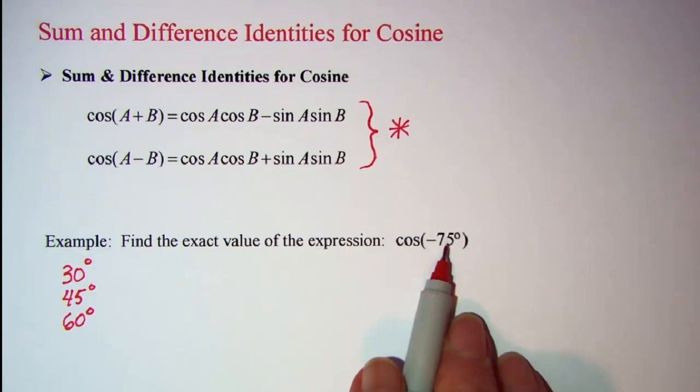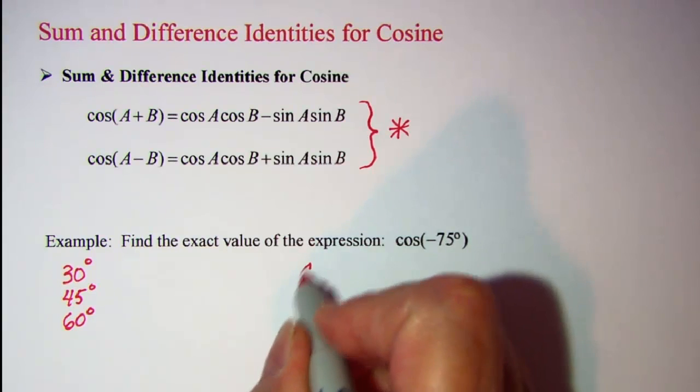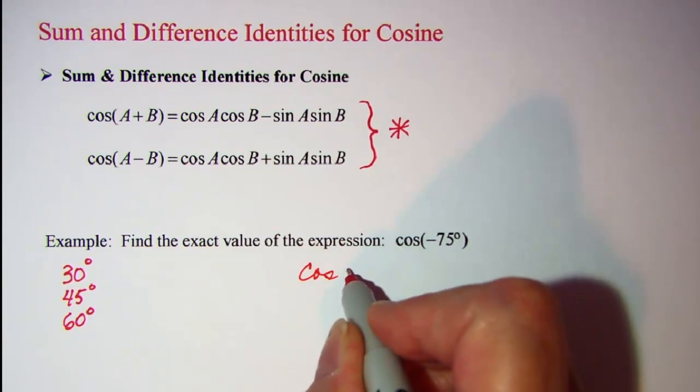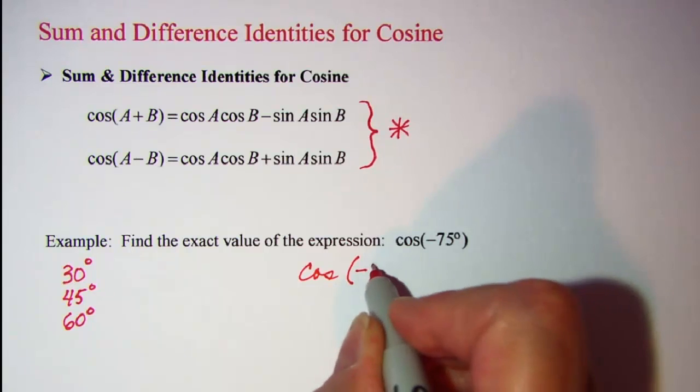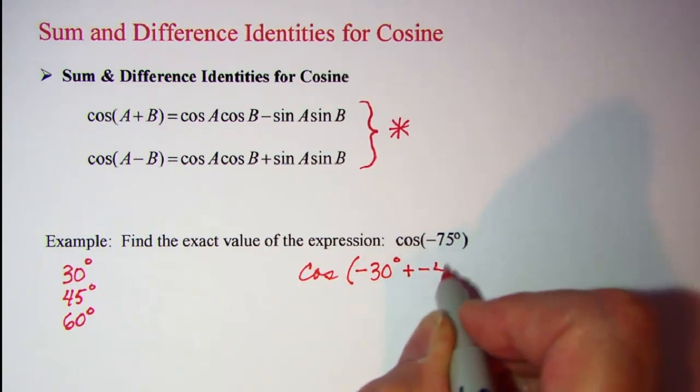Negative 75 is the same as a negative 30 plus a negative 45. So I'm going to write this as cosine of negative 30 degrees plus negative 45 degrees.